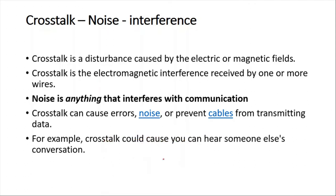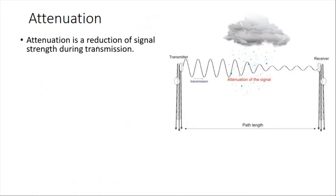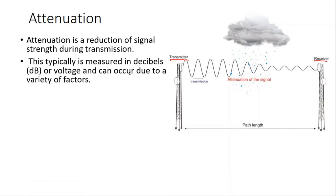What are the problems caused by crosstalk? For example, crosstalk could cause you to hear someone else's conversation. Attenuation is a reduction of signal strength during transmission. When the signal travels from the transmitter to the receiver, there is some amplitude decrease — this is called attenuation, and it is measured in decibels (dB) or voltage.